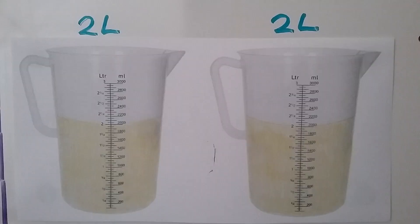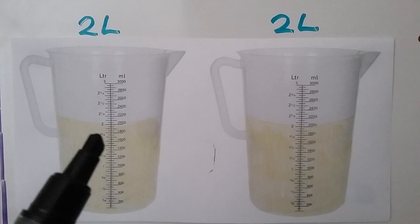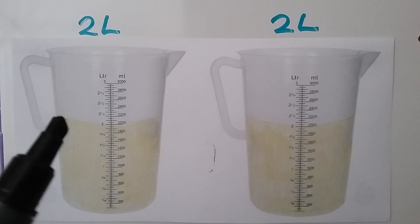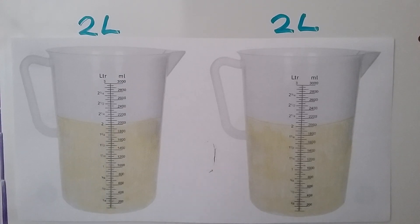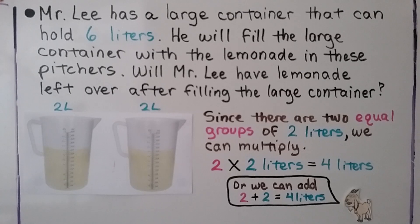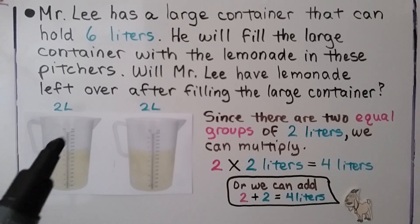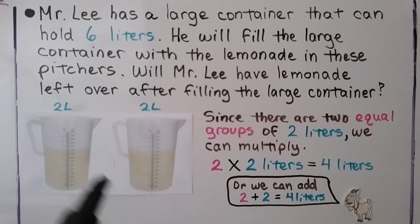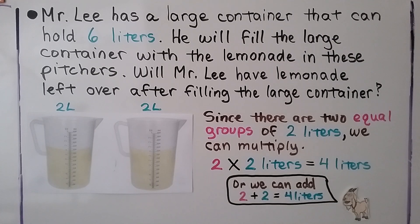Let's take a closer look at the measures on the pitchers. There are two liters of lemonade in this pitcher — the lemonade goes up to the mark for two. That's two liters, and it's the same for the other pitcher. So we have two liters and two liters. Since there are two equal groups of two liters, we can multiply: two pitchers times two liters equals four liters. We can also add two plus two to equal four liters.